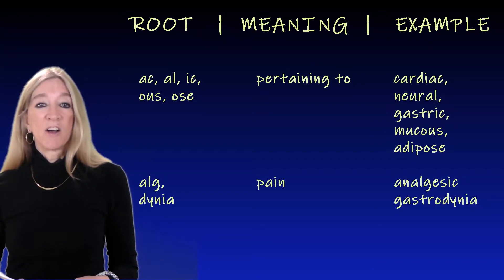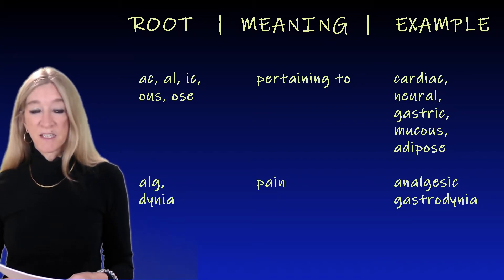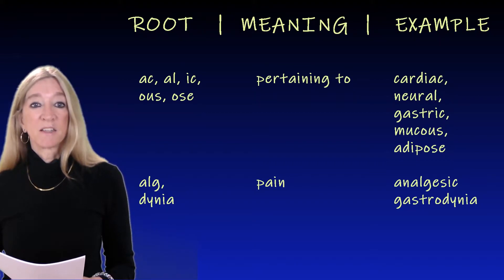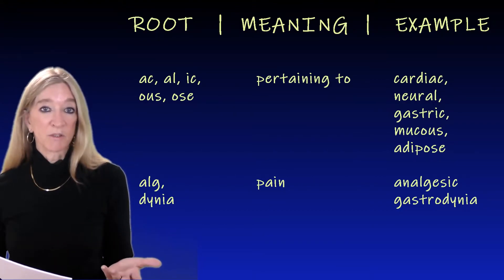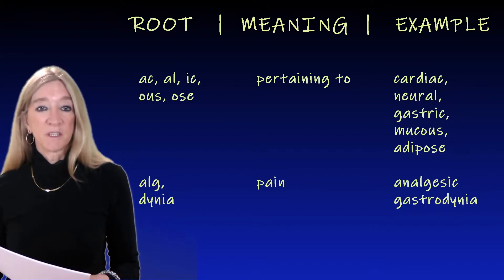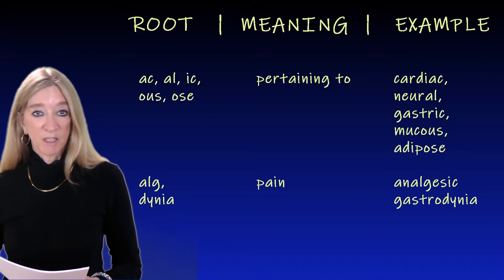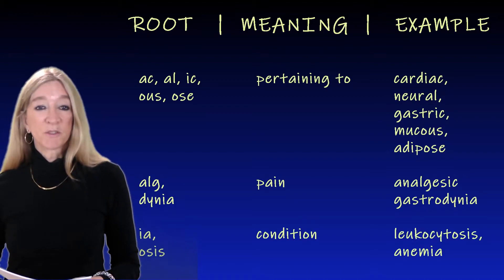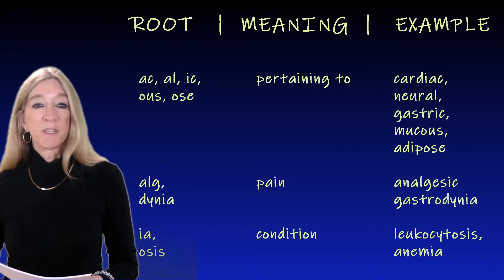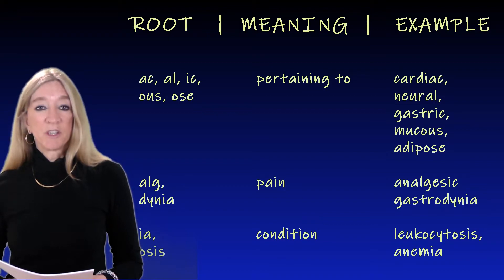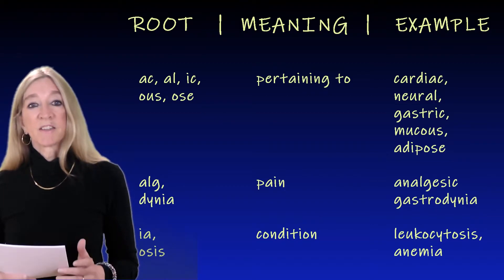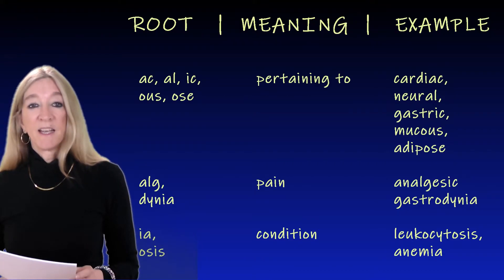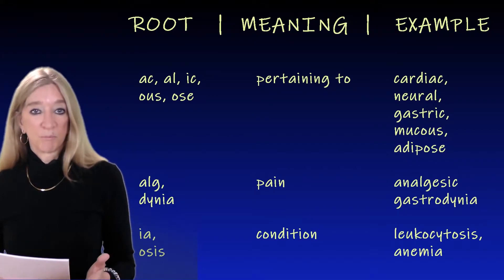The next roots, 'alg' or 'alge,' and 'dinia,' meaning pain. Examples: analgesic, meaning against pain, a pain reliever; and gastrodinia, pain in the stomach. You've probably figured out by now that the root 'gastro' means stomach. The next roots, 'ia' and 'osis,' meaning condition. Examples: leukocytosis, a condition of the white blood cells, and anemia, a condition of low blood supply.